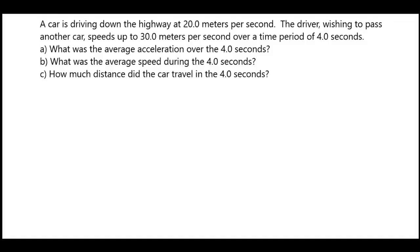In this example, we're going to be looking at how to calculate average acceleration, the average speed over some time interval, and the total change in distance or displacement during some time interval while an object is accelerating. The problem reads: a car is driving down the highway at 20 meters per second. The driver, wishing to pass another car, speeds up to 30 meters per second over a time period of 4.0 seconds.